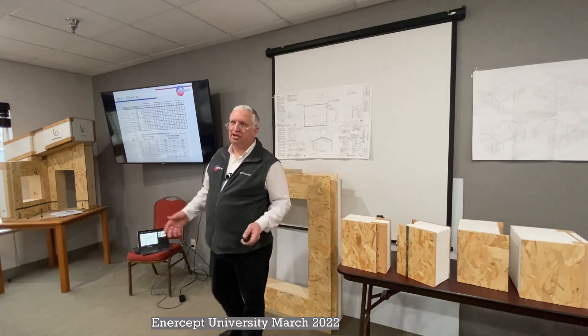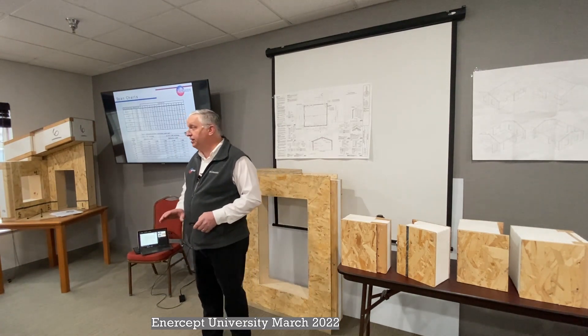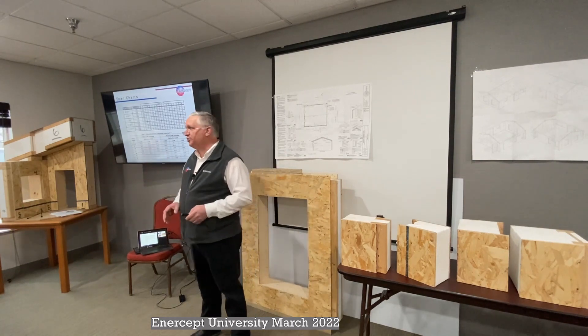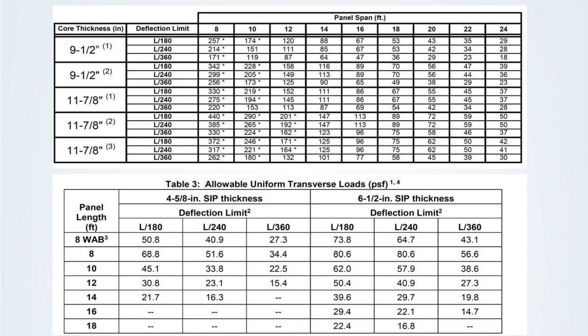The other aspect of expanded polystyrene — and Joe gets on me if I say it has any structural capabilities because it doesn't — but it's predictable. When we cut it into our chunks and glue everything together, we know exactly how it's going to function. We can produce span charts showing what you need for a 24-foot span because we know exactly how that sandwich will work. The expanded polystyrene helps us arrive at span charts that are completely accurate and fully engineered.